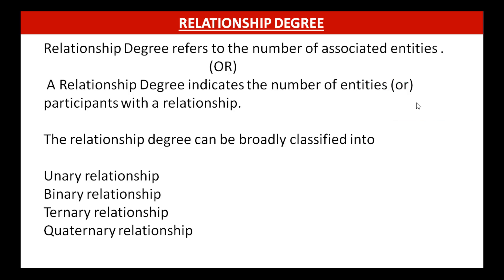Relationship degree: a relationship is an association among entities or tables. Relationship degree refers to how many entities are associated with or participating in that particular relationship. Based on this, relationship degree can be broadly classified into four types: unary relationship, binary relationship, ternary relationship, and quaternary relationship.